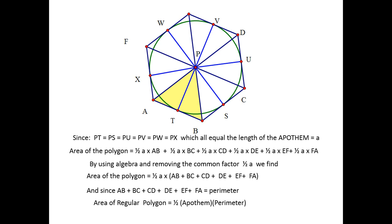AB plus BC plus CD, all those pieces added together are the perimeter. So, the area of the regular polygon is one-half the apothem times the perimeter. That's going to be for any regular polygon.